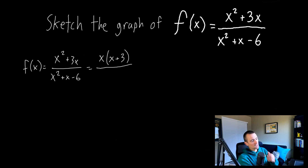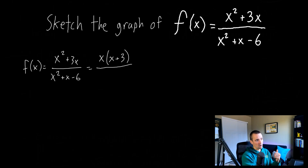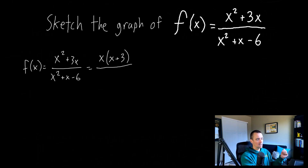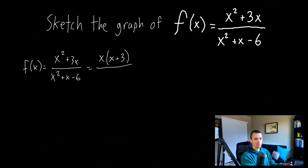Now what about our denominator? In this case, looking for a greatest common factor is not really going to help us because there's nothing that all three terms are divisible by. So we probably want to use the diamond method — thinking about two numbers that multiply to negative 6 and add to positive 1, because we have a coefficient of positive 1 on our x term. Two numbers that multiply to negative 6 and add to positive 1 would be positive 3 and negative 2. So x² + x - 6 factors into (x + 3)(x - 2).